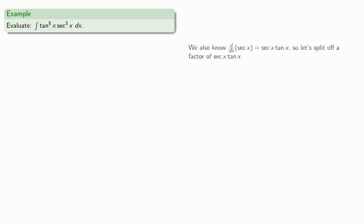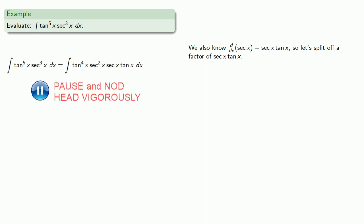We also know that the derivative of secant is secant x tangent x. So let's split off a factor of secant x tangent x. And now, we can see if we can rewrite everything else in terms of secant.